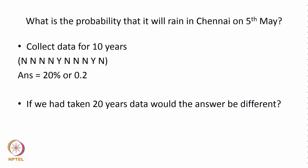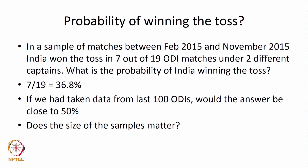What is the probability that it will rain in Chennai on 5th May? Let us assume we have collected data for 10 years — these may not be actual data — where N means no and Y means yes. If we are given these 10 pieces of data on yes and no, and 2 out of 10 show yes, then we say the probability is 20 percent or 0.2. That leads us to the next question: if we had taken 20 years of data, would there be 4 yes out of 20? We need to answer that question as we move along.